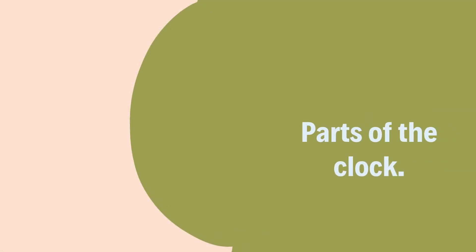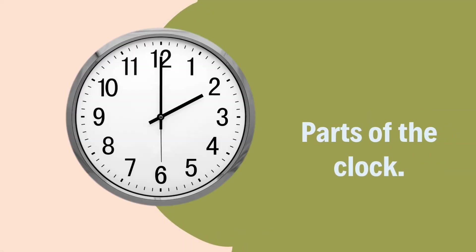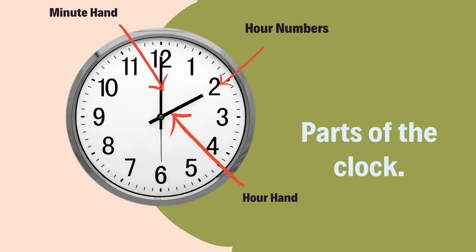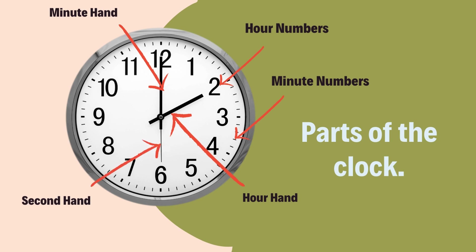So kids, let's understand first about parts of the clock. A smaller dial is known as an hour hand. A longer dial is known as a minute hand. Numbers 1 to 12 are known as hour numbers. Small indicators between hour numbers are known as minutes. A thin dial is known as a second hand.